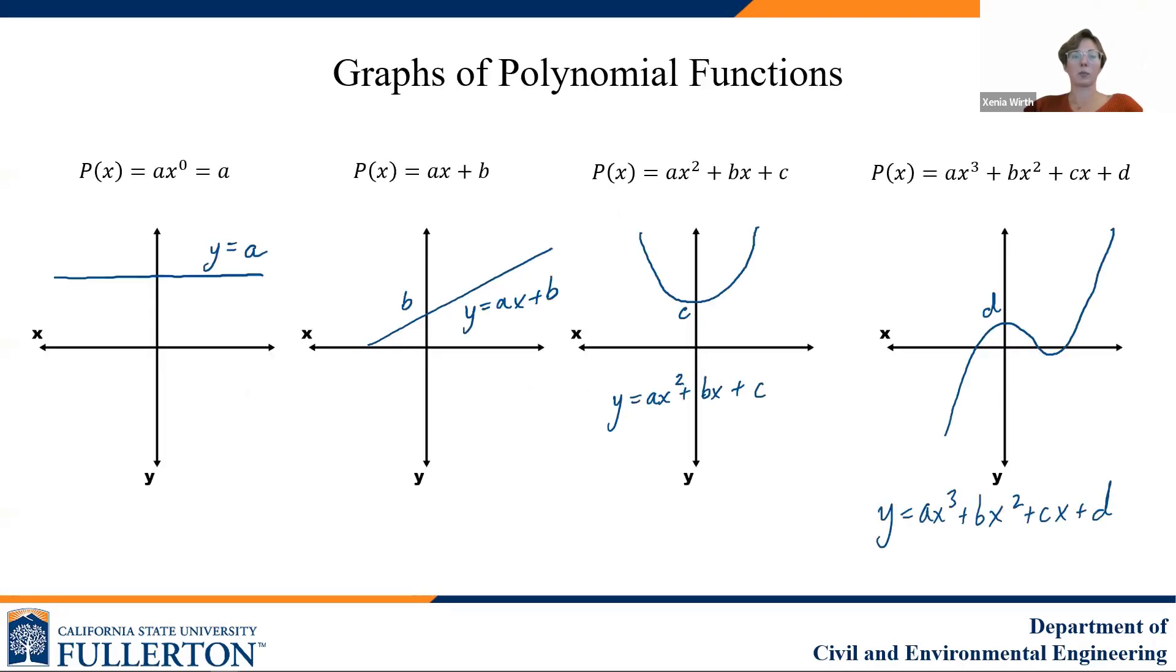Here are some graphs of those polynomial functions we just discussed. A constant function, y equals a, is merely a horizontal line that intersects the y axis at a value of a. A linear function is a straight line that has the form y equals mx plus b, with a slope intercept or a y-intercept of b. A quadratic function is a parabola. It can be an upward facing parabola like this, using my laser pointer here, like this. If a is positive, it will be a downward facing parabola like a rainbow if a is negative, and c is where the function intersects the y axis. A third order polynomial function crosses the x axis at three points, here, and has this general shape, where the y intercept is d.